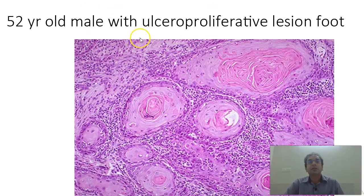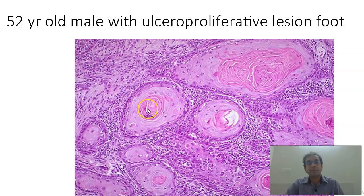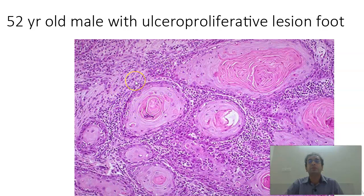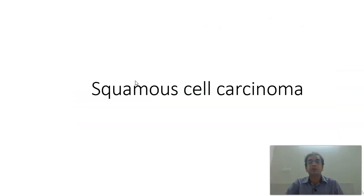Next case is that of a 52-year-old male with an ulceroproliferative lesion in the foot. What you find here are islands of epithelial cells which have keratin pearls — epithelial whorls with keratin pearls inside. There are well-defined nests and it is infiltrating everywhere. This is a squamous cell carcinoma — from the look of it, a well-differentiated squamous cell carcinoma.